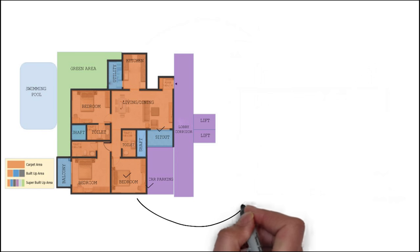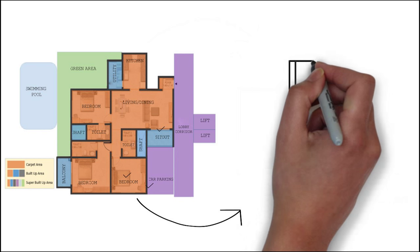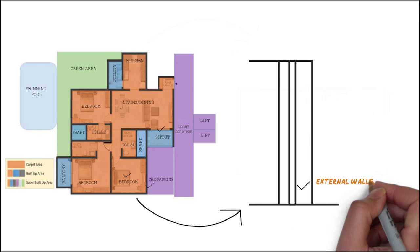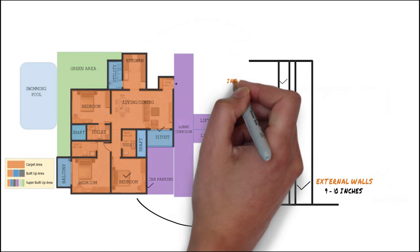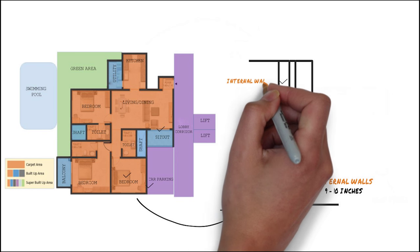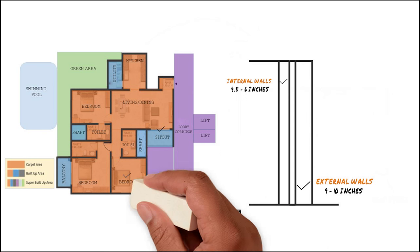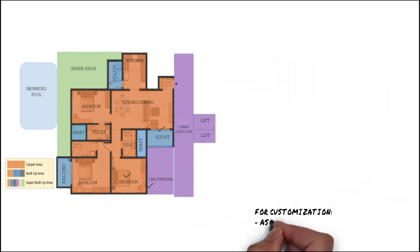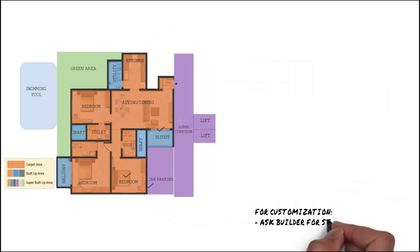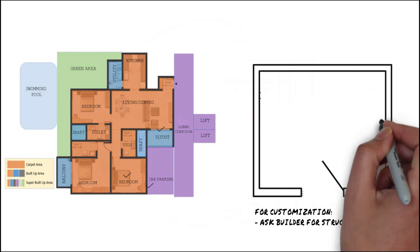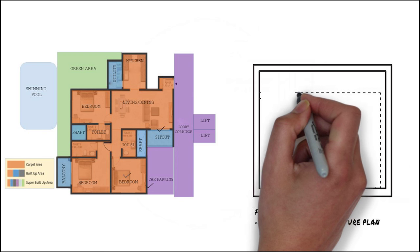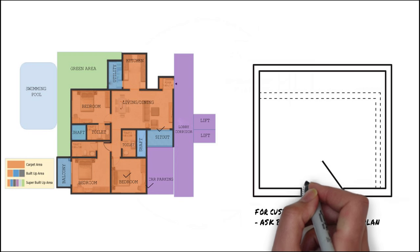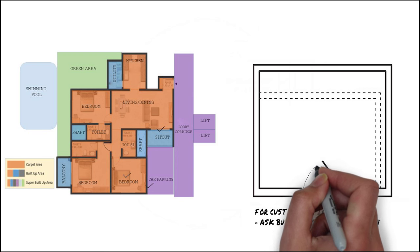You should also look for the dimensions of the walls. External walls usually have a width of 9 to 10 inches, while internal walls vary between 4.5 inches and 6 inches in width. If you're planning any structural changes for the house, you should ask the builder for a structure plan that highlights the placement of beams. In some cases, builders don't entertain any customization.